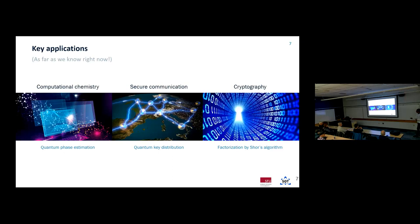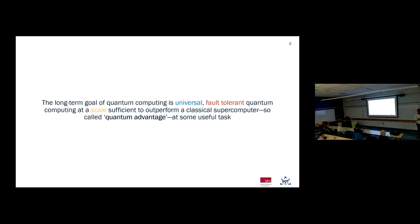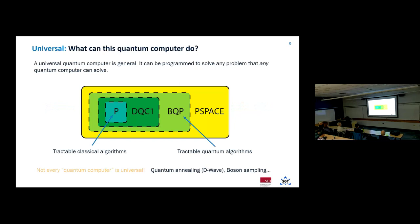I've mentioned that you need to build a quantum computer of sufficient size. The long-term goal is to build a universal, fault-tolerant quantum computer with scale sufficient to outperform a classical supercomputer — what we call quantum advantage. Universal means your quantum computer can be programmed to solve any problem that any quantum computer can solve. We want to be able to do the full list of algorithms from the Quantum Algorithm Zoo — every classical computer does the same things on some level, and we want that for quantum.